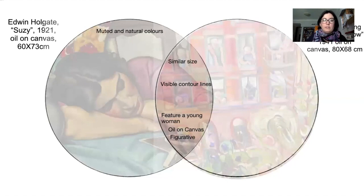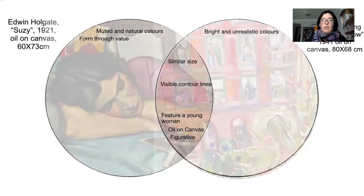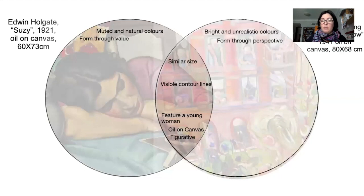Holgate's painting 'Susie' uses muted and natural colors, whereas McCloy's painting uses very bright and unrealistic colors, which is more fitting of the younger age of the character within her painting. Holgate creates the illusion of form through the use of value and shading, whereas McCloy creates the idea of form through perspective — we can imagine the actual shape and solidity of these objects because of the layers of perspective within her piece.